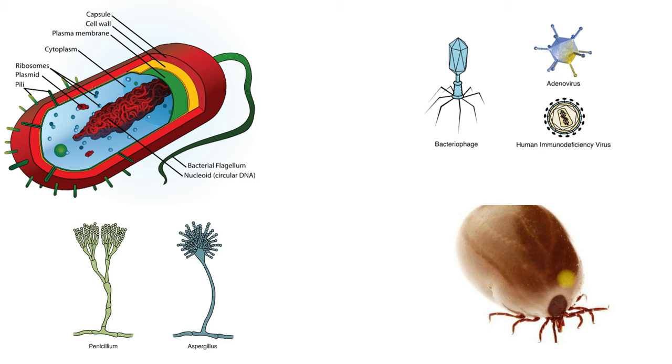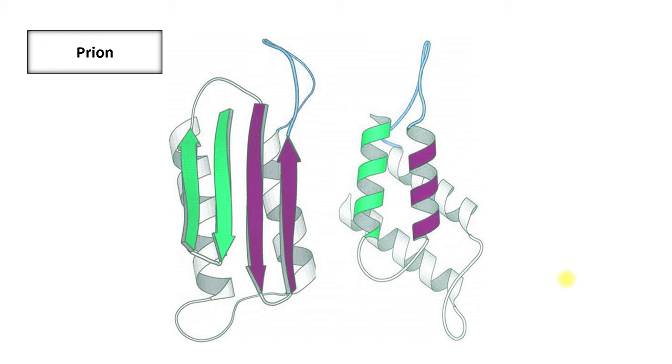When we think about infection, it inevitably comes to mind what is causing it — the pathogen. These pathogens could be bacteria, virus, fungus, or parasites. But another class of pathogen is there that is both strange and unique. It is called prion.